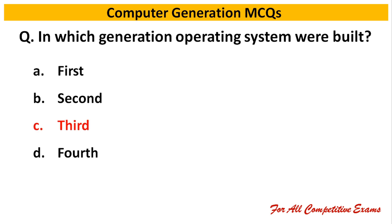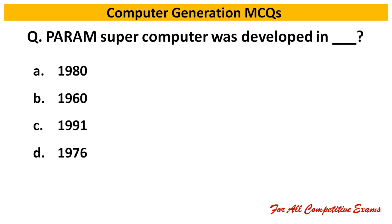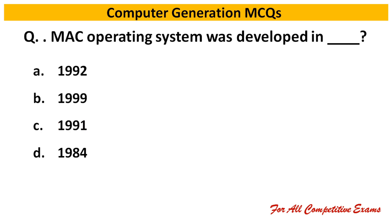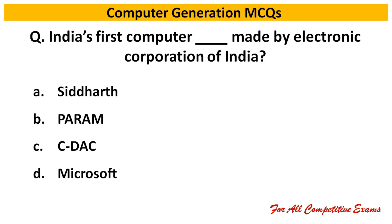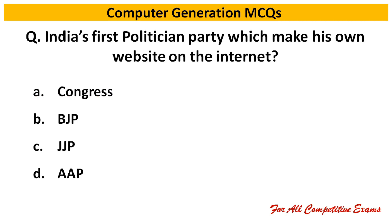Next question: In which generation were operating systems built? Right answer is third generation. Next question: Mac operating system was developed in dash — Right answer is 1984.